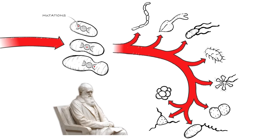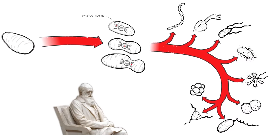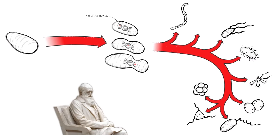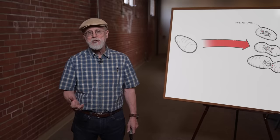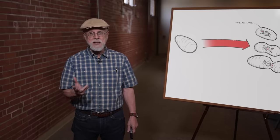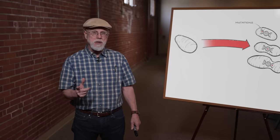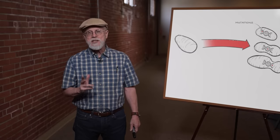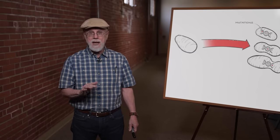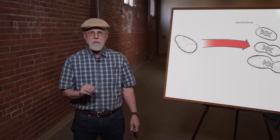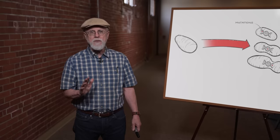Bacteria with helpful mutations survived. Bacteria with unhelpful mutations were eliminated by natural selection. Mutations can cause small changes. That's easily observed in nature. But here's the critical question. Can a sequence of many mutations added together over time result in a major gain of function?